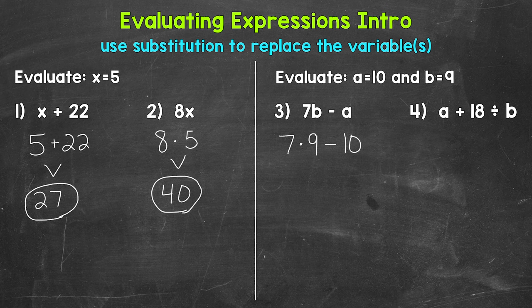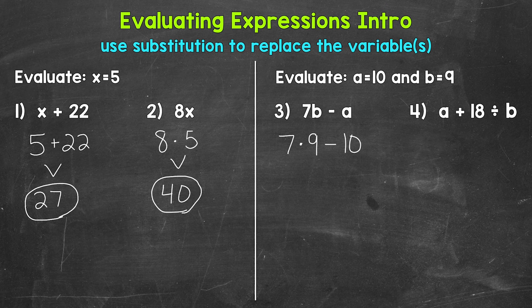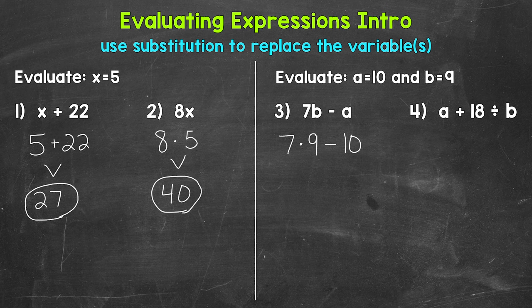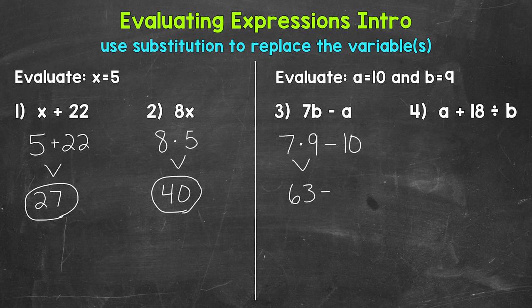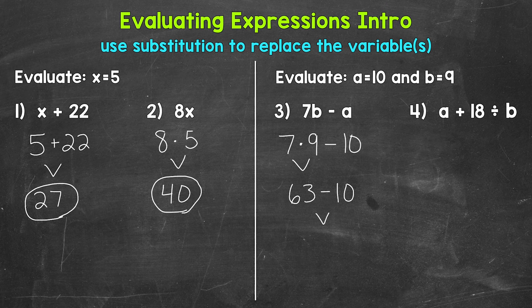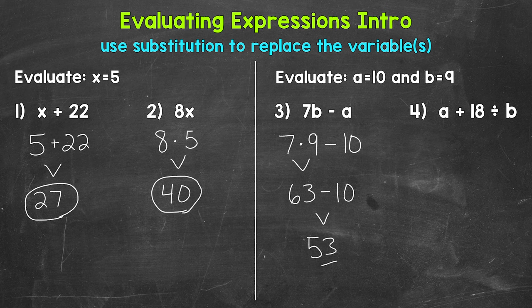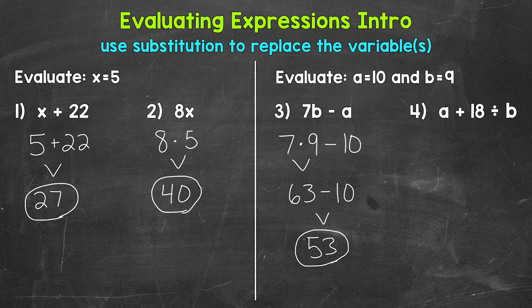Now we can evaluate. But we have more than one operation—multiplication and subtraction—so we need to use the order of operations, PEMDAS: parentheses, exponents, multiplication and division, then addition and subtraction. Multiplication comes before subtraction, so let's multiply first. 7 times 9 equals 63. Then we bring down the subtraction sign and the 10. We end with 63 minus 10, which equals 53. So the value of this expression is 53 when a equals 10 and b equals 9.